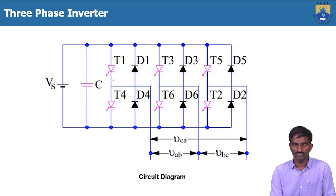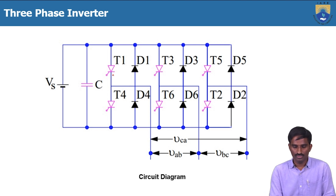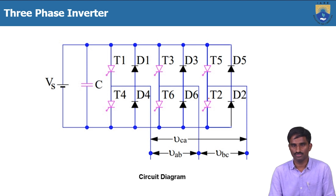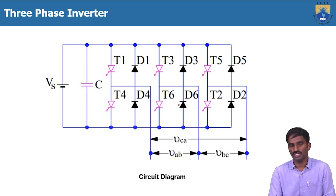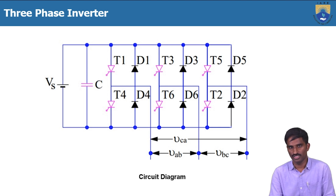The 120-degree and 180-degree modes of conduction refer to how long each thyristor conducts. In 180-degree mode, every thyristor conducts for 180 degrees of duration. In 120-degree mode, every thyristor conducts for 120 degrees. That is the only difference between the two modes. Based on that, the output voltage and current waveforms will differ, which we will discuss one by one.